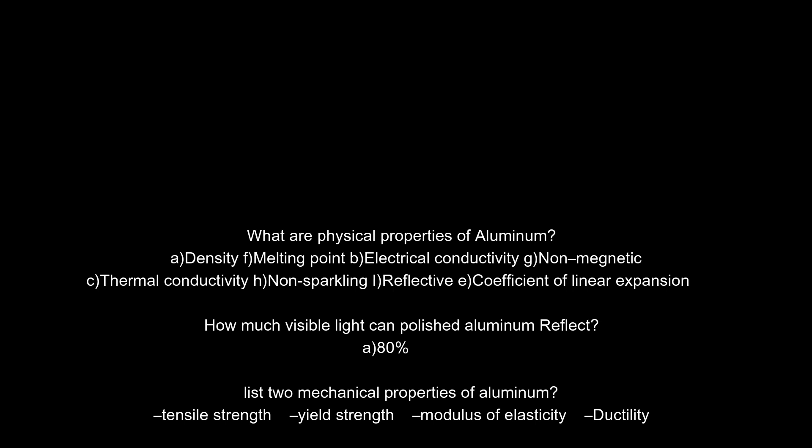How much visible light can polished aluminum reflect? 80%. List two mechanical properties of aluminum. Tensile strength, yield strength, modulus of elasticity, and ductility.